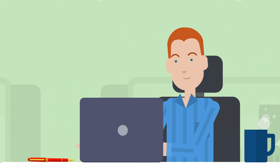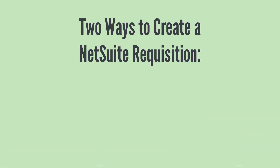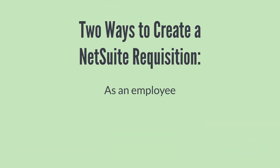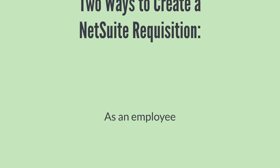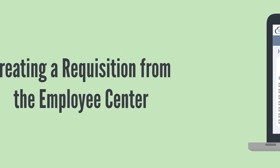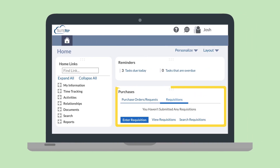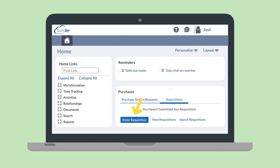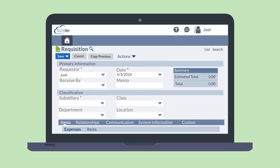Now let's look at exactly how you would create a new requisition. There are two ways to do this: either as an employee from the Employee Center, or while logged in as a NetSuite Administrator. To create a requisition from the Employee Center, log into your Employee Center and choose the Requisitions tab on your Purchases tile. Here, select the button Enter Requisitions. This will take you to a new requisition record, where you will fill out as much information as you are able to.